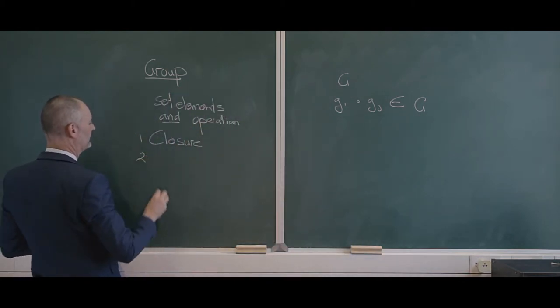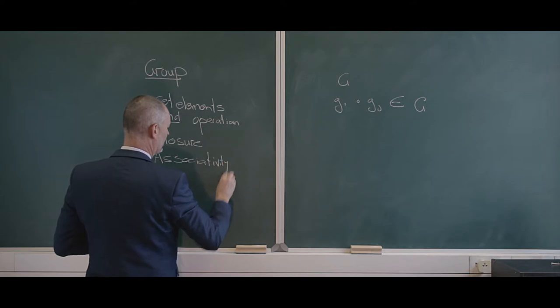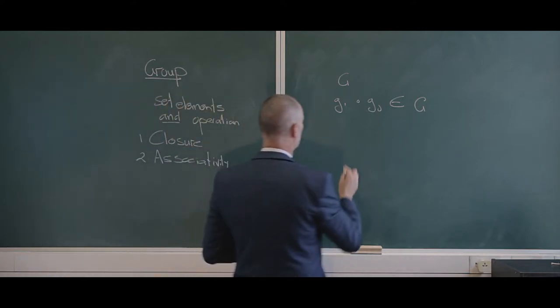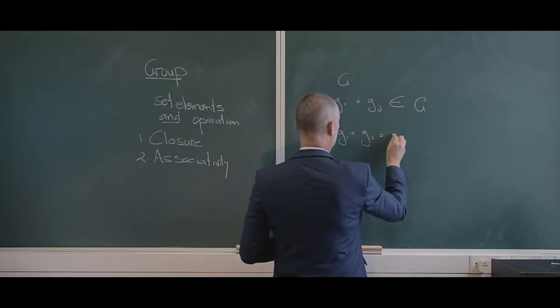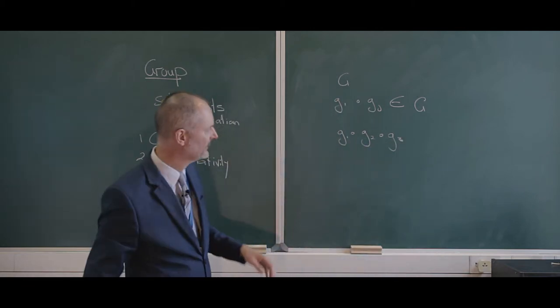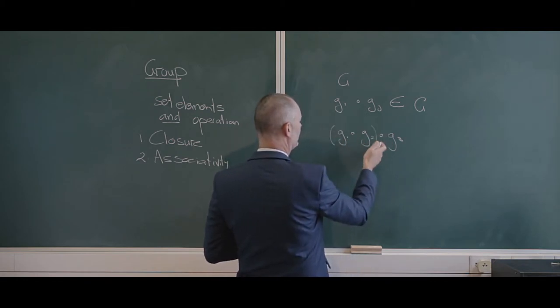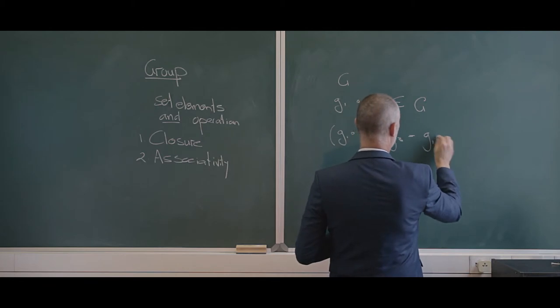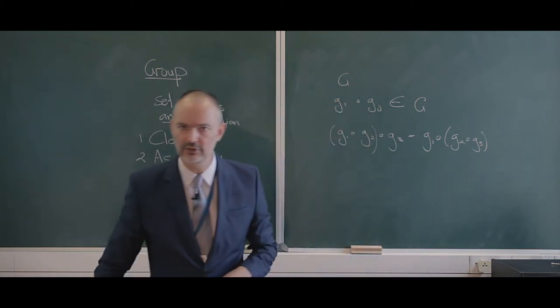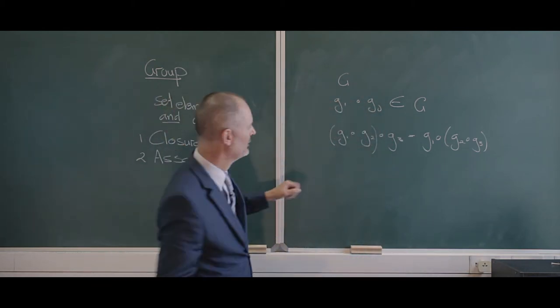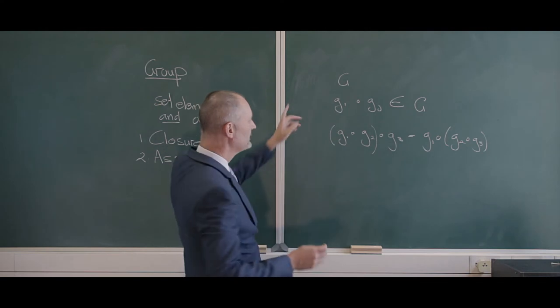The second one is there must be associativity. In other words, if I have the scenario where I have G1 and this operation G2 and the operation on G3, just three random elements from my group, I have the following: that if I do these two first and then that, that has got to equal G1 and then G2 and G3. If I have that, I have associativity. That is different from commutativity. You can have groups that have commutativity, but it's not part of the definition here of a group.